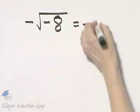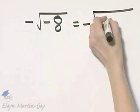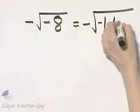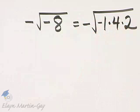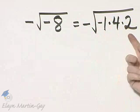and then let's rewrite negative 8 as negative 1 times 8, but I will write 8 as 4 times 2 because 4 is a perfect square factor of 8.